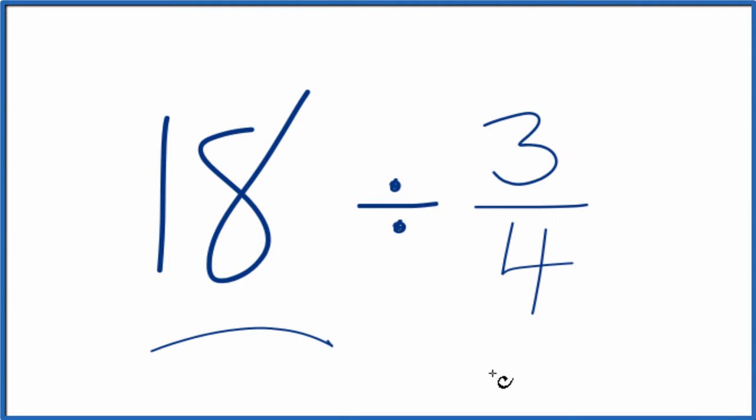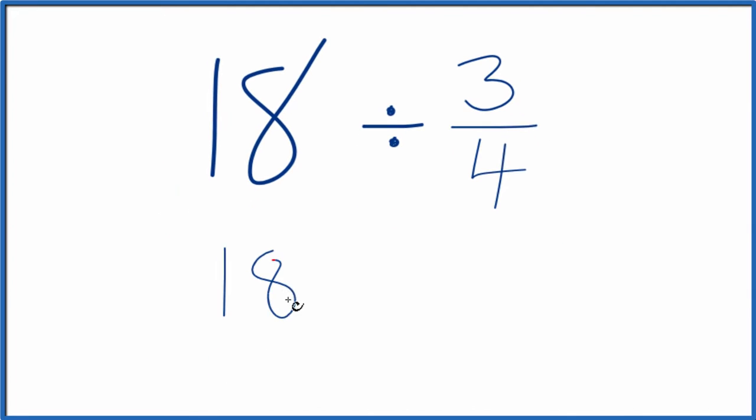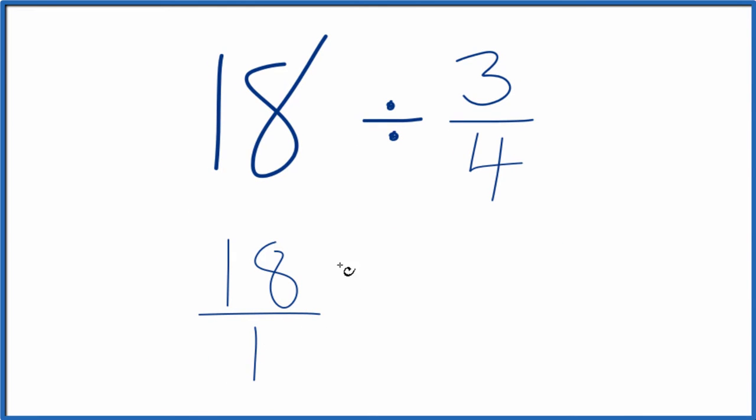Let's divide 18 by 3 fourths. Here's how we'll do it. Let's call this 18 over 1. It's still 18. We're just dividing by 1, but that gives us a fraction. That'll be helpful.